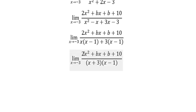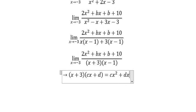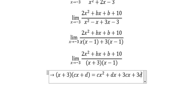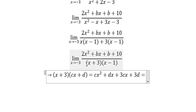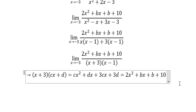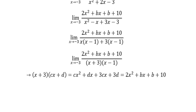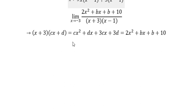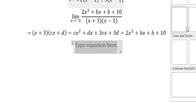To do this, I will set up a new form: (x+3)(cx+d). This is the factorization we want for the numerator. We need to distribute this and compare coefficients. Expanding gives cx² + dx + 3cx + 3d = 2x² + bx + b + 10.